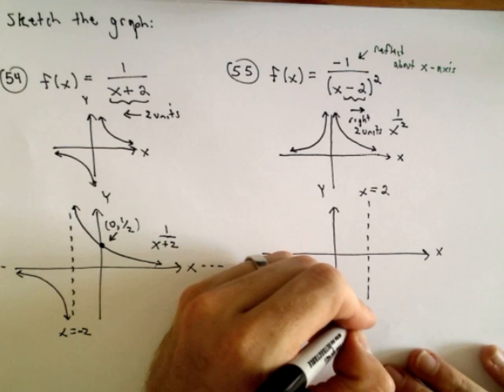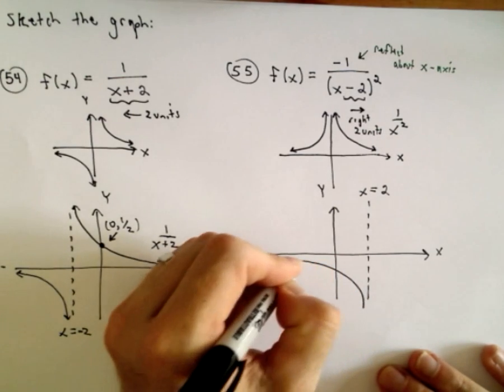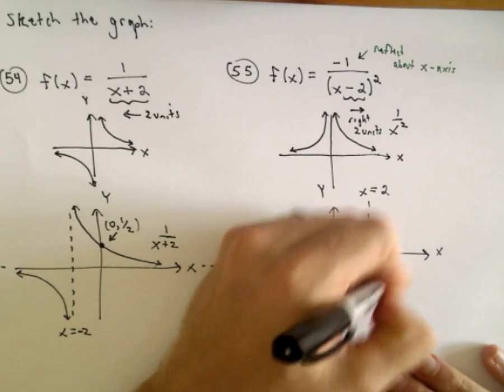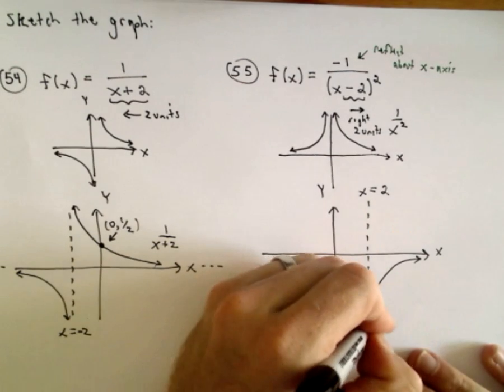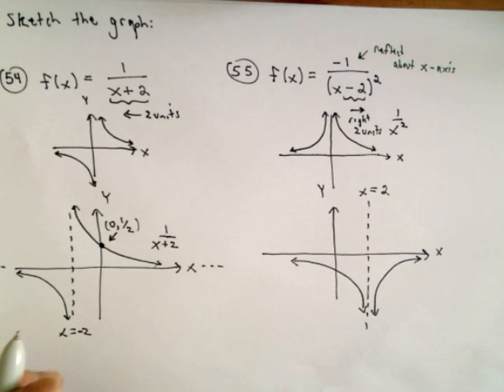And now, it's just going to be sitting underneath the x-axis. And again, we still have that vertical asymptote.